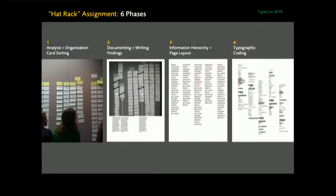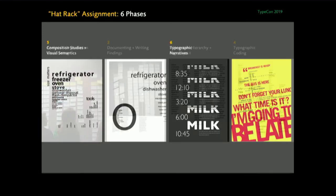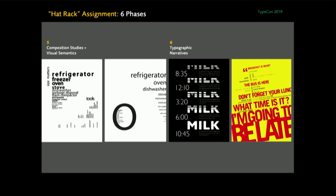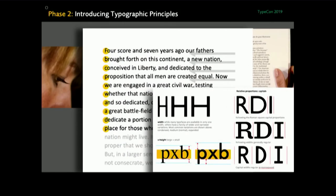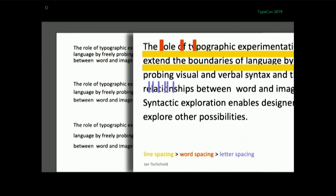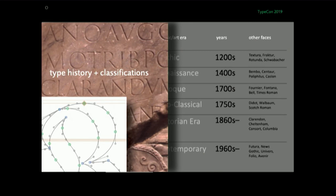They create their own studies. The hat rack assignment is in six phases. The second phase: they document and write about their findings. The third is information hierarchy. The third and fourth are about composition studies and visual semantics. And the sixth is typographic narratives, where they document their findings together. It's at this stage that we finally start introducing typographic basics and principles — about how we read, letter spacing, line spacing — and we make them aware of the heritage they're going to take on: type history and type families.